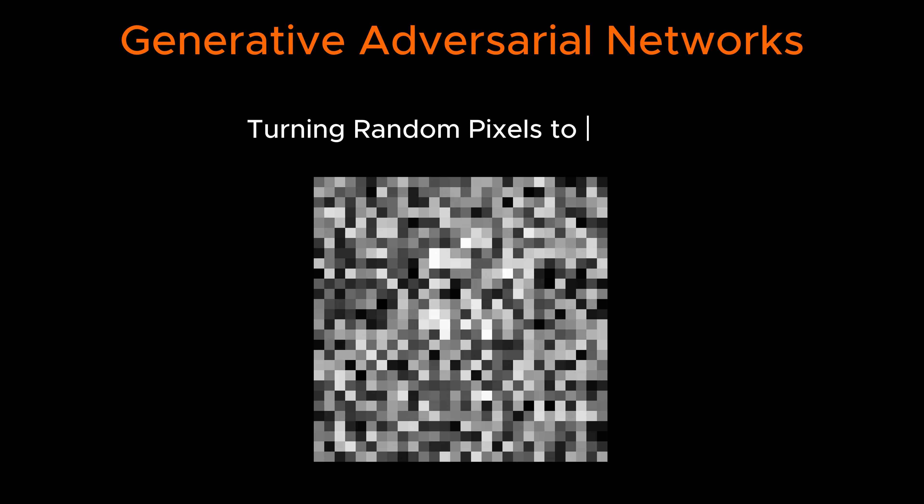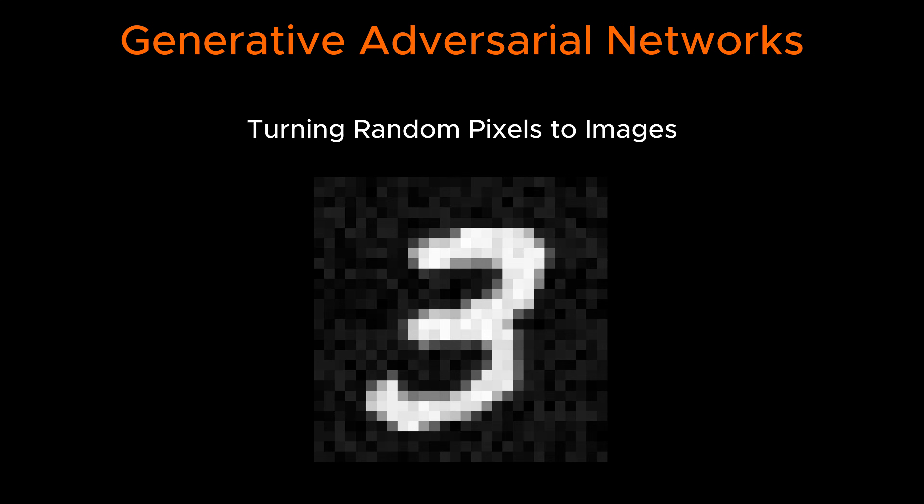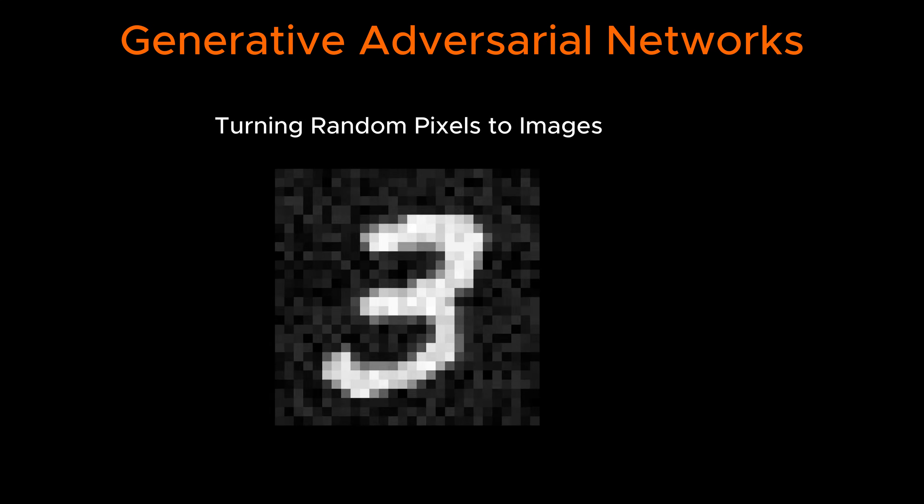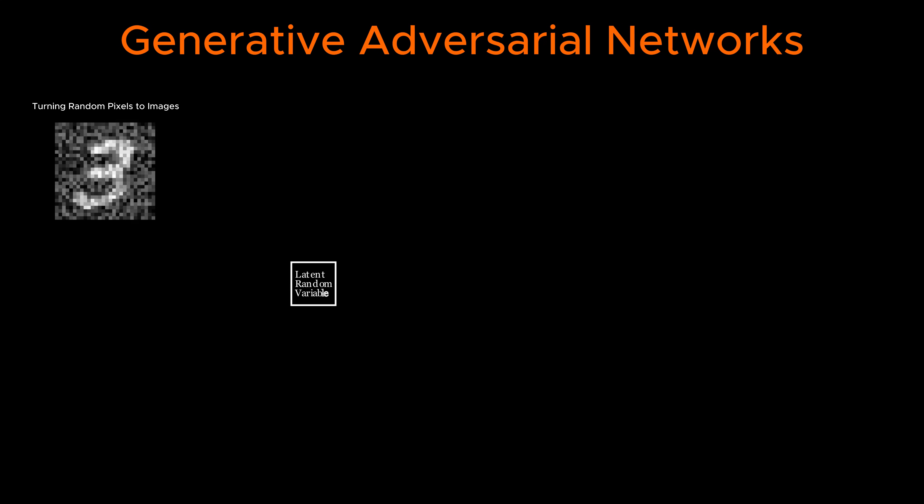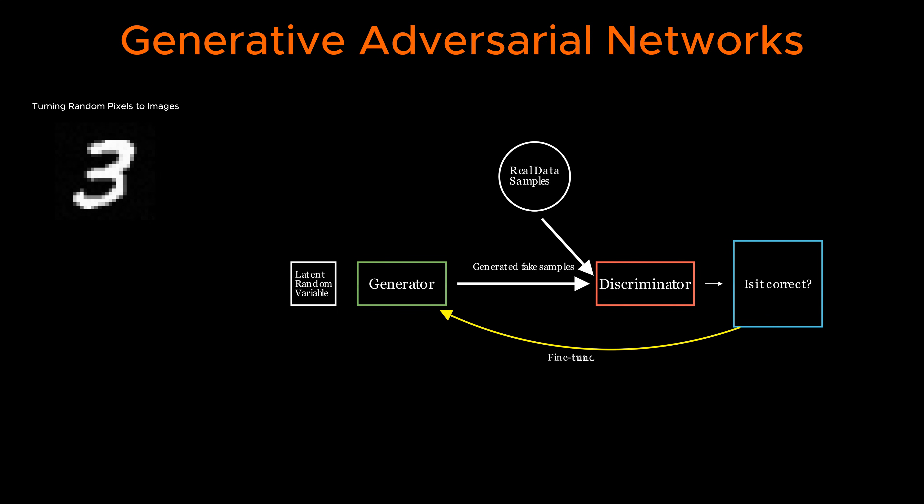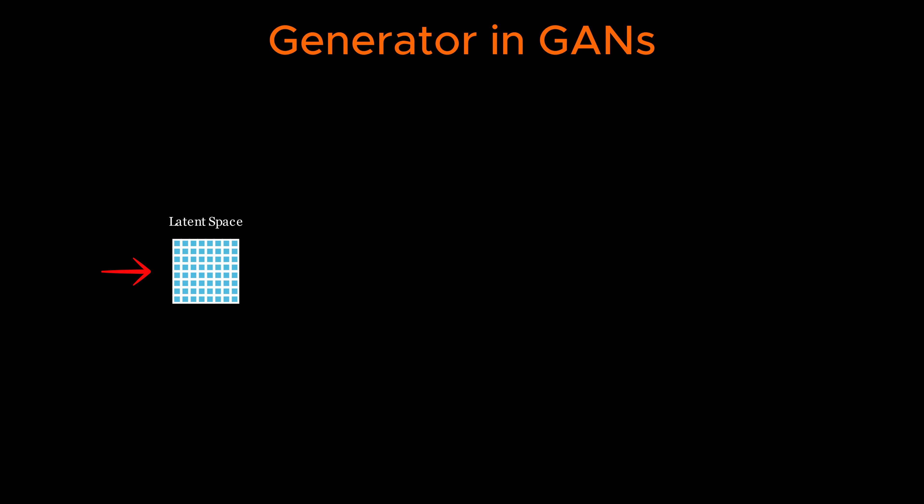As the second example, let's now see how generative adversarial networks, or GANs, generate images using the latent space. At the heart of a GAN are two neural networks, the generator and the discriminator, which compete against each other in a process known as adversarial training. The generator's goal is to create images that resemble real ones, while the discriminator tries to distinguish between real and generated images.